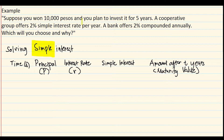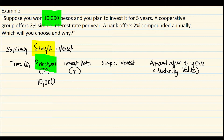Going back to the question: which value is the principal? We have 10,000 pesos, which is our principal P. The time is five years, so we fill in one, two, three, four, and five years. The interest rate is 2% simple interest per year, so r = 2% for each year.